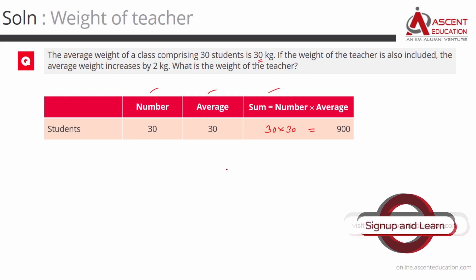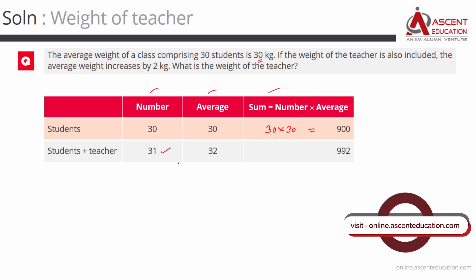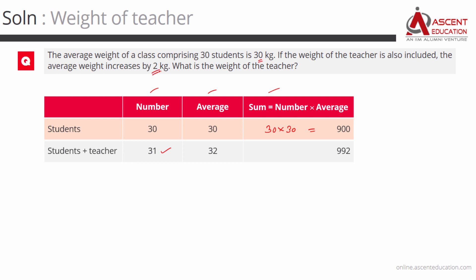If the teacher is included, that is 30 students plus one teacher, giving 31 people. The average increases by 2, which means the new average is 32. So the new sum of weights is 31 into 32, which is equal to 992.